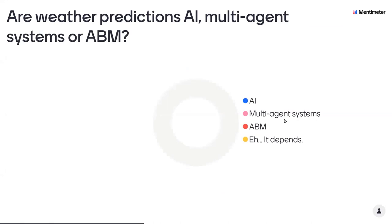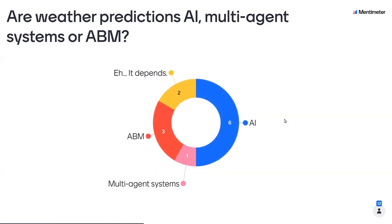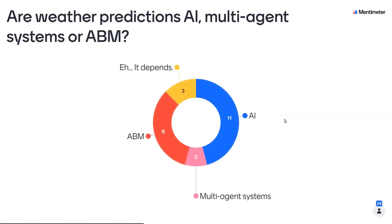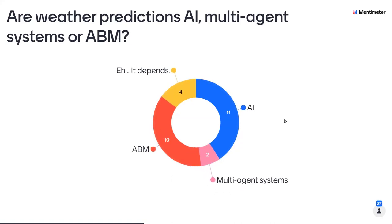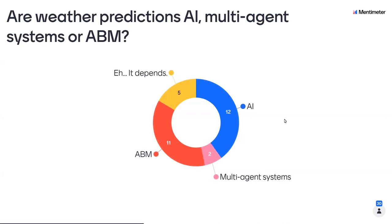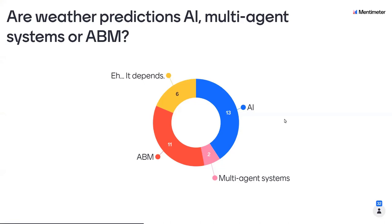Are weather predictions AI, multi-agent systems, or agent-based models? I actually don't know. You definitely can have multi-agent systems if you're talking about multiple weather stations each communicating and feeding into an AI that then creates the predictions. The individual weather stations would probably be multi-agent systems. The single program that runs big predictions could be an agent-based model, or it could be an AI, or it could be both. You are not wrong to have a good spread of answers here.